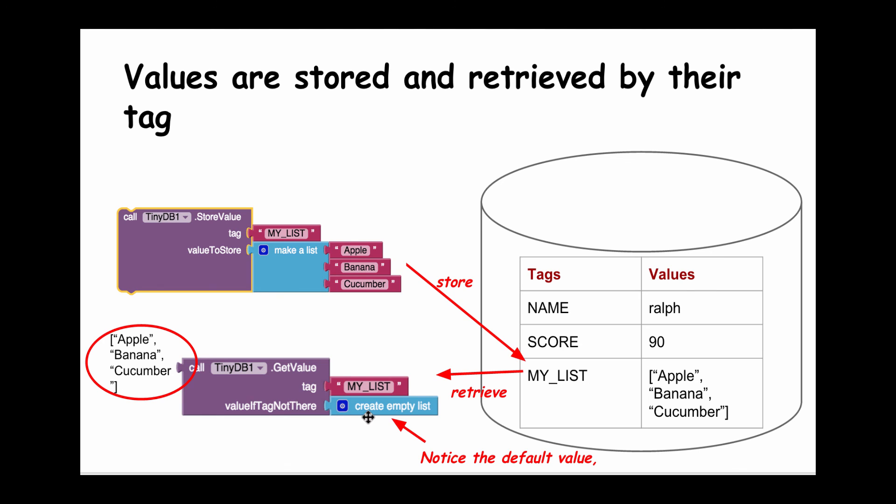And again, notice the default value. In this case, if there is no such list as MY_LIST in the database, we want to return the empty list as the default value so we can continue to use this in list operations. So that's a quick look at the App Inventor TinyDB component, which we're now going to incorporate into our app.